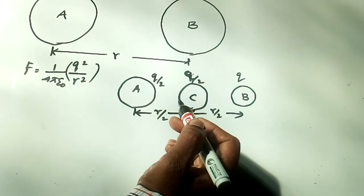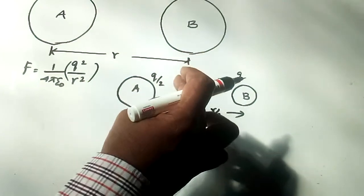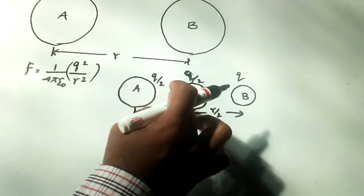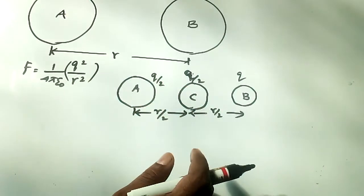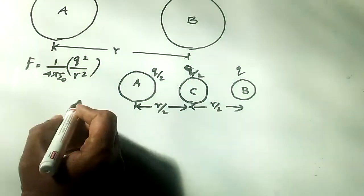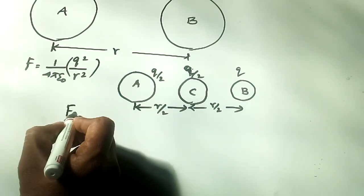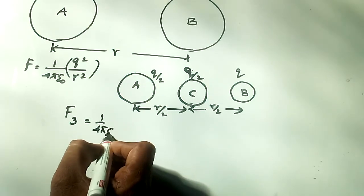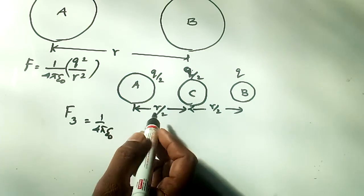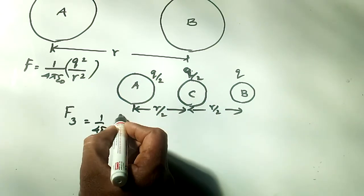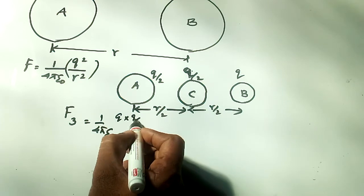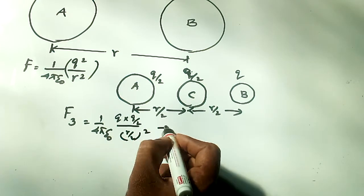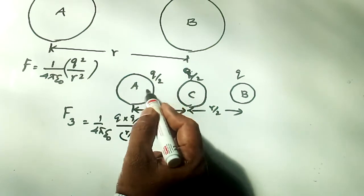The force on the third charge C placed at the center is F₃ = (1/4πε₀) × [Q(Q/2)/(R/2)² minus (Q/2)(Q/2)/(R/2)²].